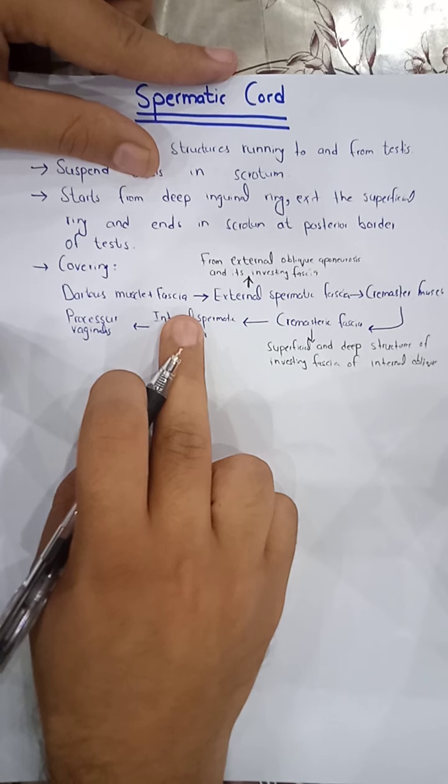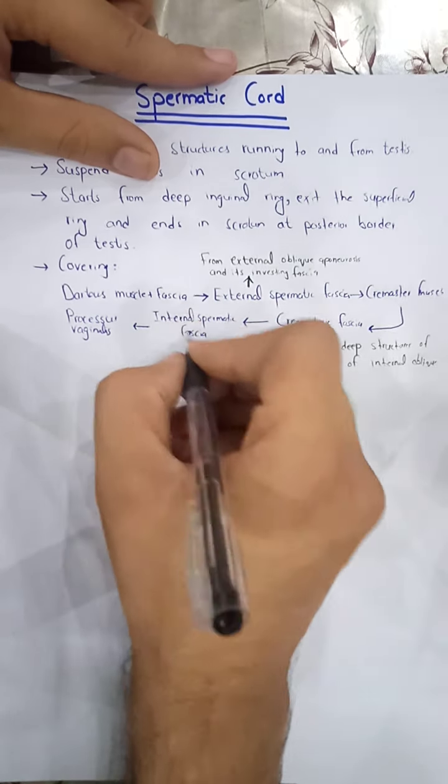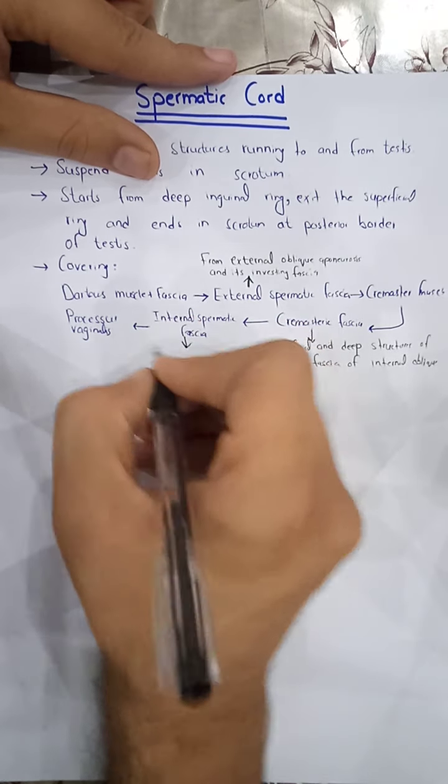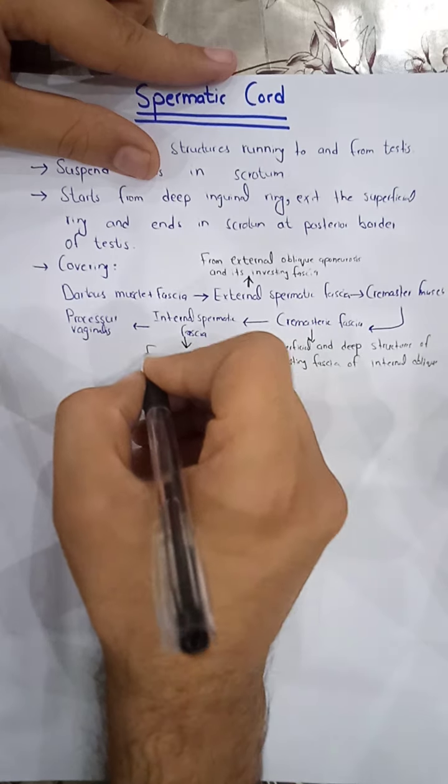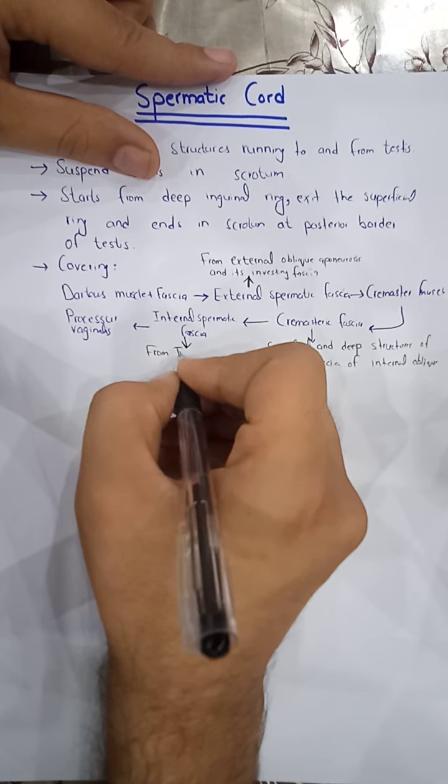The internal spermatic fascia is derived from the transversalis fascia.